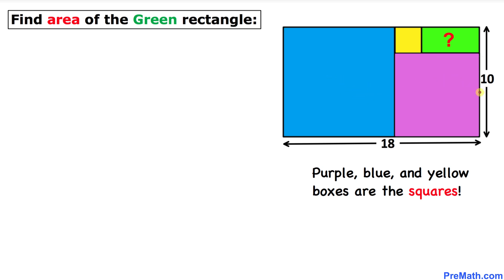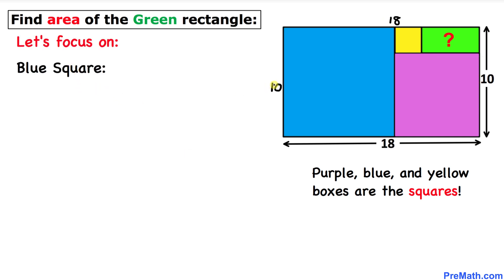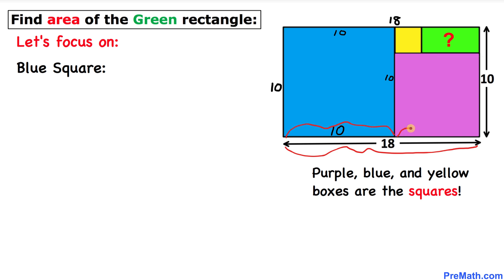In this big rectangle, opposite sides are equal in length. If this side is 10 units, the opposite side is also 10 units; if this side is 18, the opposite side is 18 as well. Now let's focus on the blue square — since all sides are equal, each side is 10 units. We know this total length is 18 and this portion is 10, so the remaining length is 18 minus 10, which is 8 units.